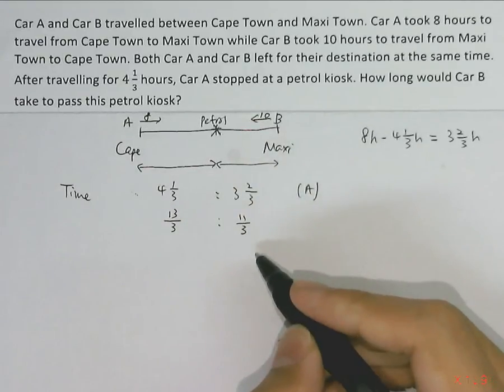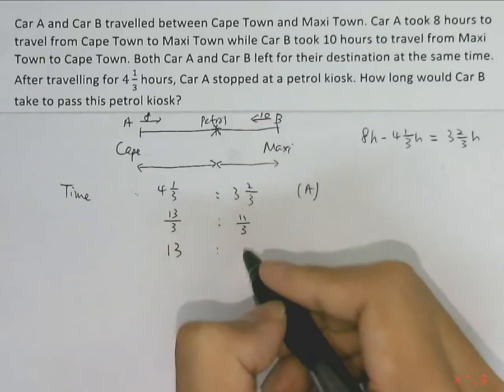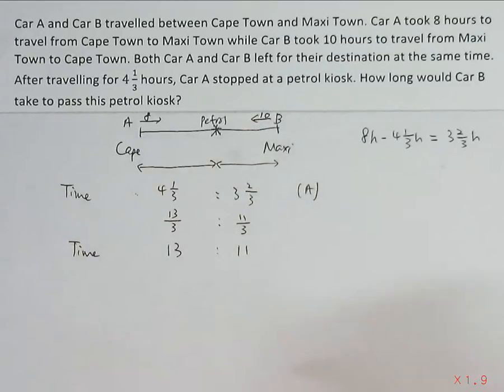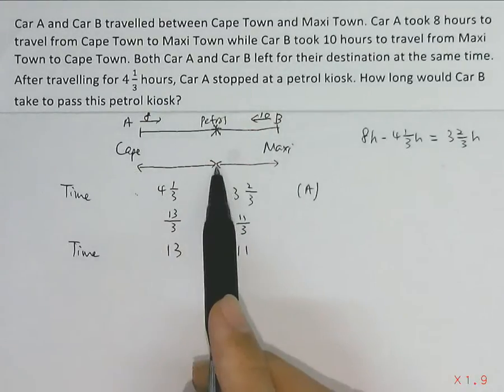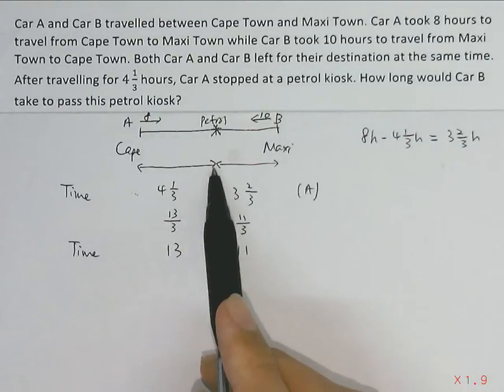So this ratio can now be simplified into 13 to 11. This is the ratio of time that car A takes to travel from Cape Town to petrol kiosk and then from the petrol kiosk to Maxi Town.